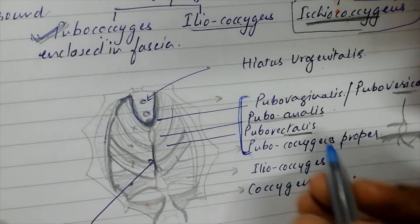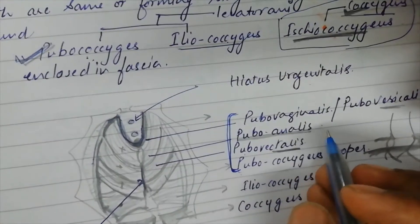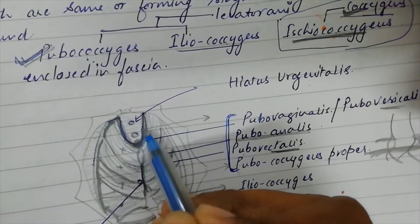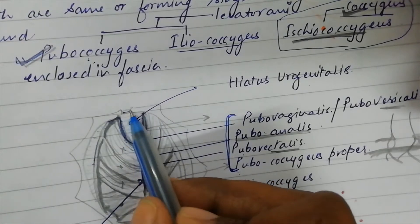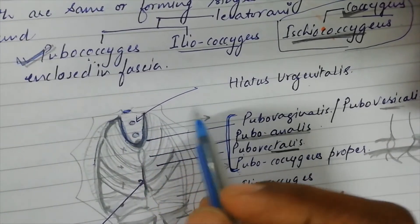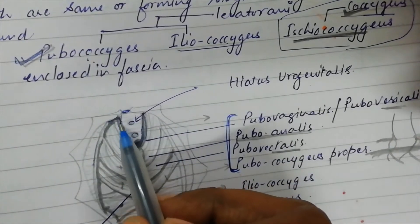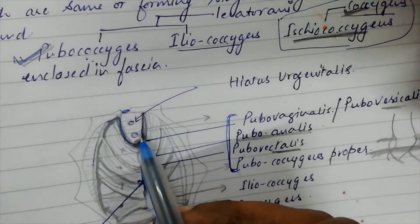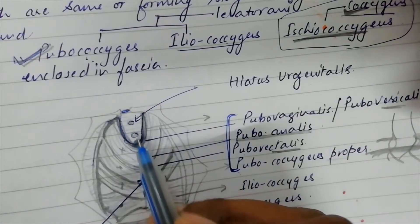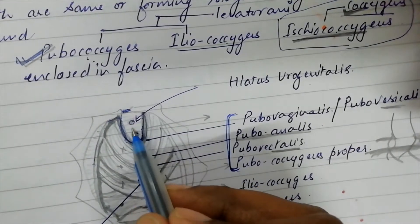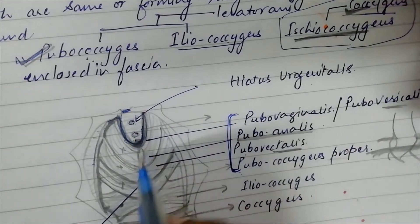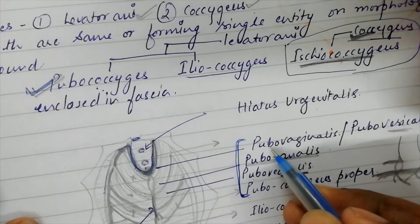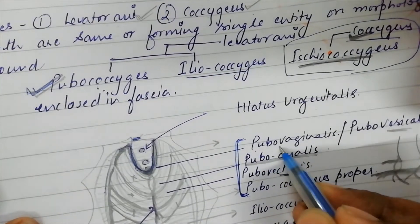Pubococcygeus is deficient anteriorly, just behind the pubic symphysis, forming a hiatus known as hiatus urogenitalis, because the urinary and genital apertures are situated here. The anterior-most part is pubovaginalis.